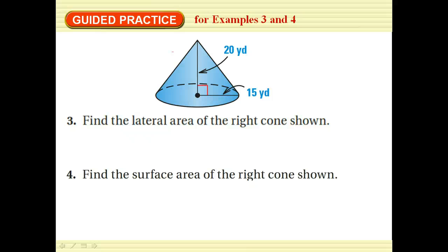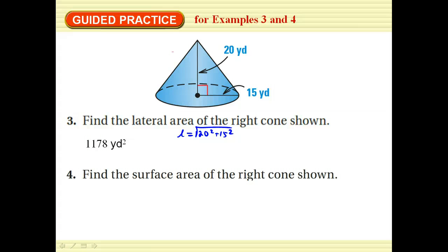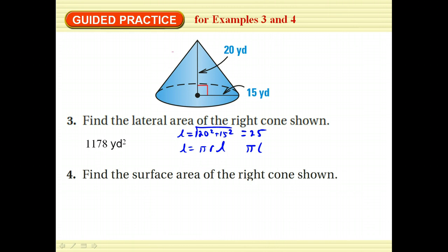Here's guided practice: find the lateral area of this right cone. It comes out to be approximately 1178. To find the lateral edge, take the square root of 20 squared plus 15 squared, which gives 25. So the lateral area is pi r l — pi times r, which is 15, times l, which is 25 — giving pi times 15 times 25, approximately 1178.